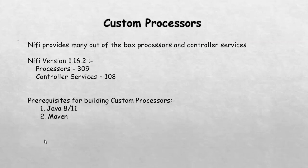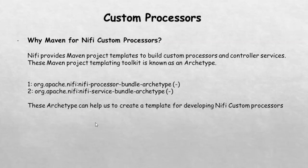There are two prerequisites for building a custom processor: Java and Maven. You need to have Java 8 or Java 11 installed on your system, and you can download the latest version of Maven. We have already seen the installation of Java in our third chapter. Before we see how to install Apache Maven, let's understand why Apache Maven is needed for NiFi custom processors.